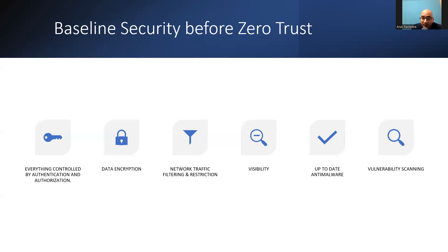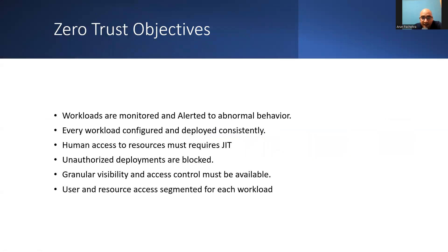Once we have met the baseline infrastructure objectives, we can focus on implementing a modern infrastructure with an end-to-end zero trust strategy. These are things we usually apply, but now we are going to implement zero trust strategy for security. Let's see what objectives we need to meet.